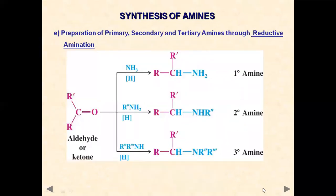The next reaction is synthesis of amines — primary, secondary, or tertiary — through reductive amination. We can use an aldehyde or ketone with different nitrogen sources: aldehyde/ketone with ammonia gives a primary amine; aldehyde/ketone with a primary amine gives a secondary amine; aldehyde/ketone with a secondary amine gives a tertiary amine.